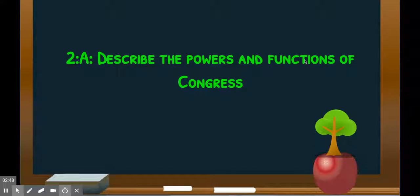Looking at objective 2A — describing the powers and functions of Congress. You have to know Congress is bicameral, two houses, as part of the Great Compromise. I kind of think that as you come into this class you understand that from US History. If you don't, we'll do our best, but we don't have time to go over things you should already have a basic understanding of.